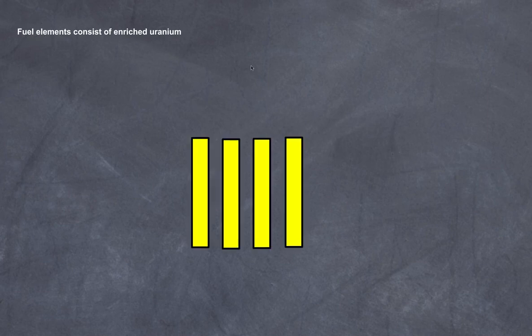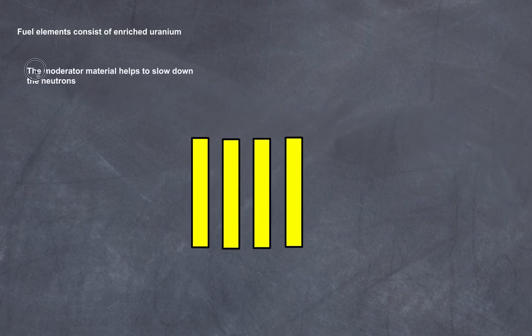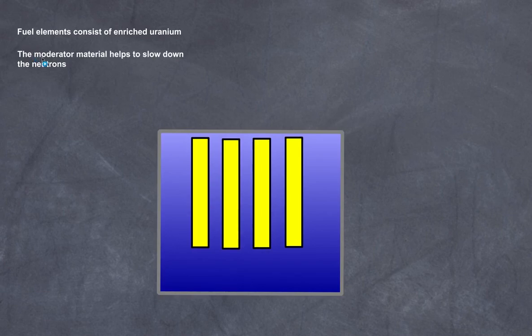Now let's have a look at the basis of a nuclear reactor. First thing we need to have is fuel. Our fuel basically consists of enriched uranium, and so they're usually formed into rods. The second thing that we need is what we call a moderator.